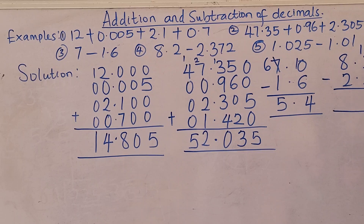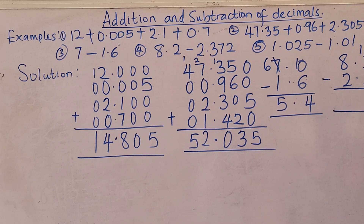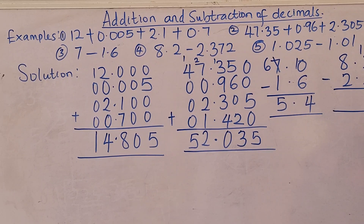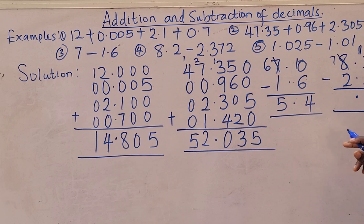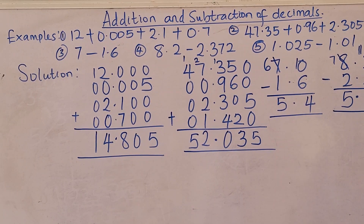Borrow one from here — this position becomes 1, and this becomes 10. Borrow again — this becomes 10. 10 take away 2 is 8. 9 take away 7 is 2. Then 1 take away 3 is not possible, so borrow one — you have 11. 11 take away 3 is 8. Then decimal point in its place. 7 take away 2 is 5. So the final answer is 5.828.